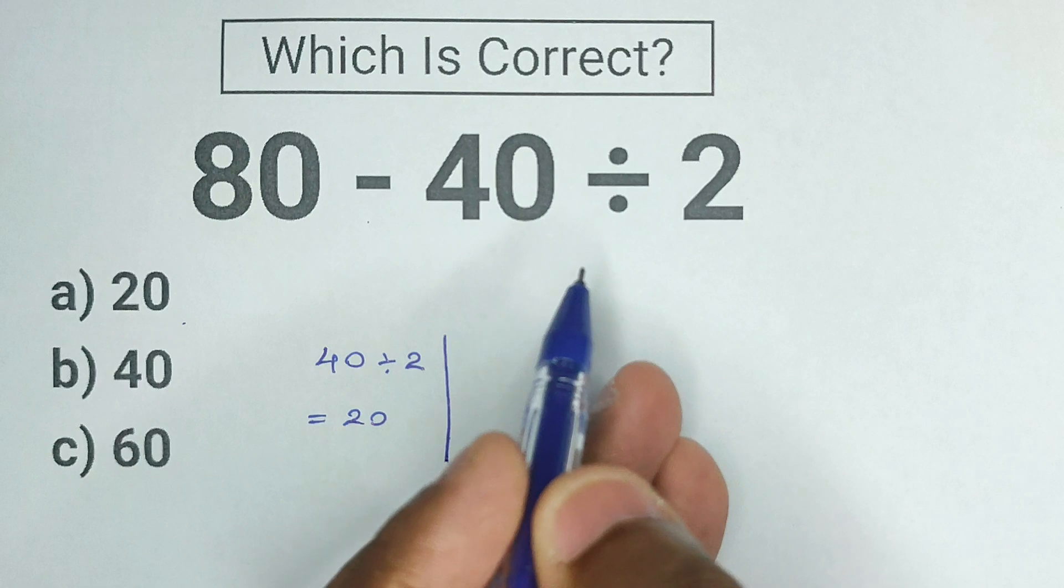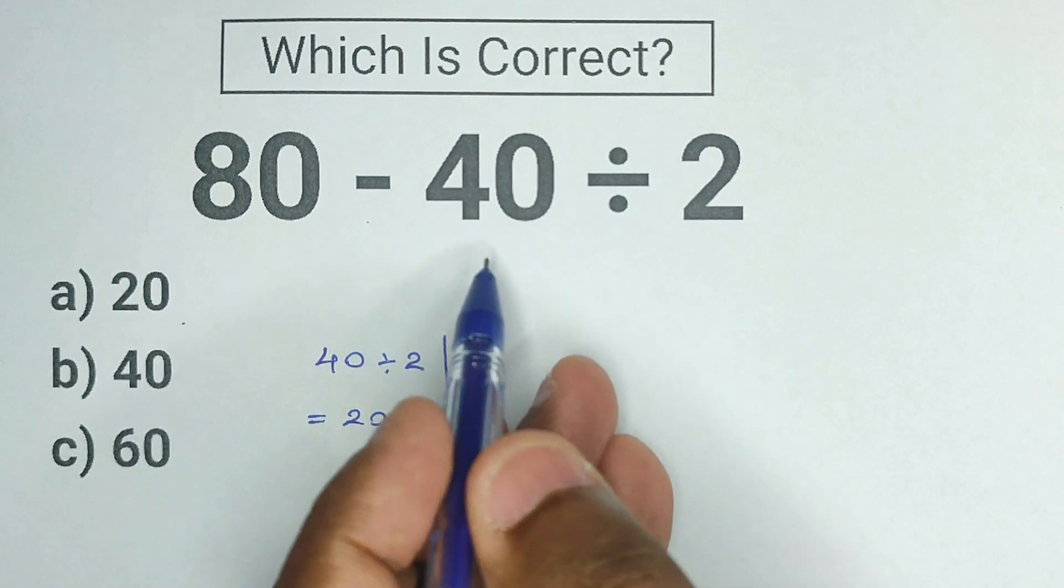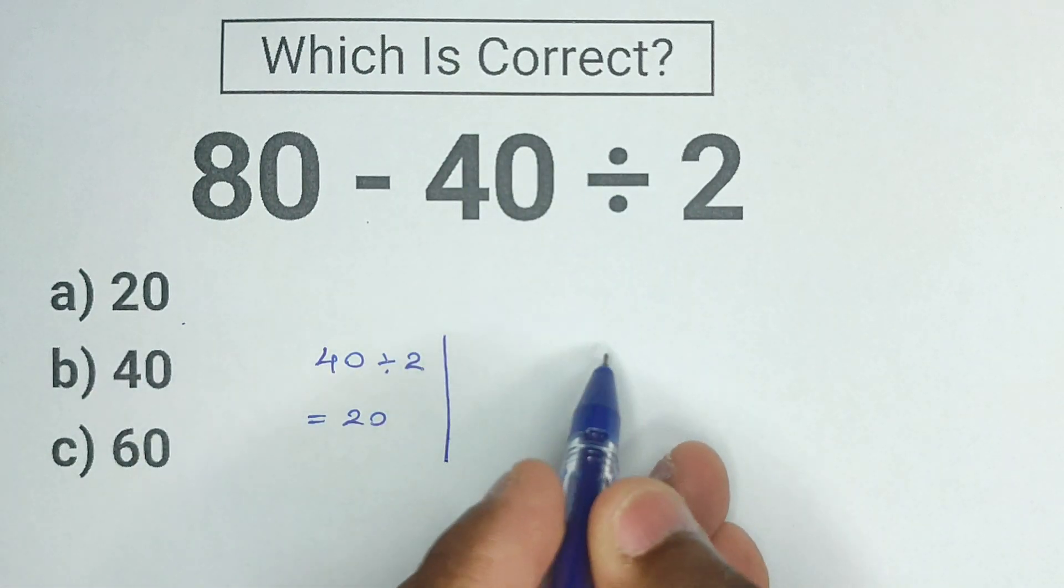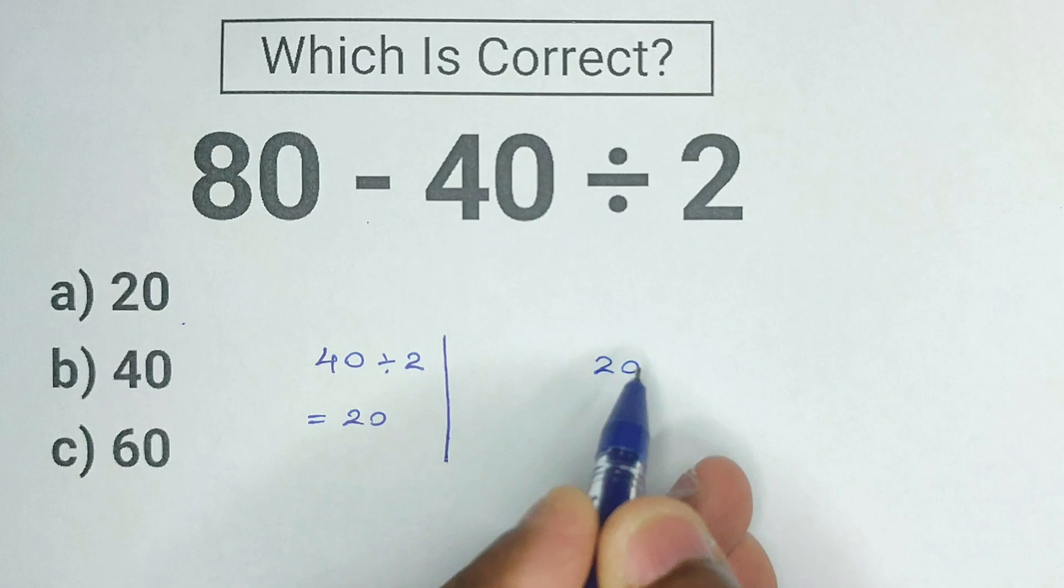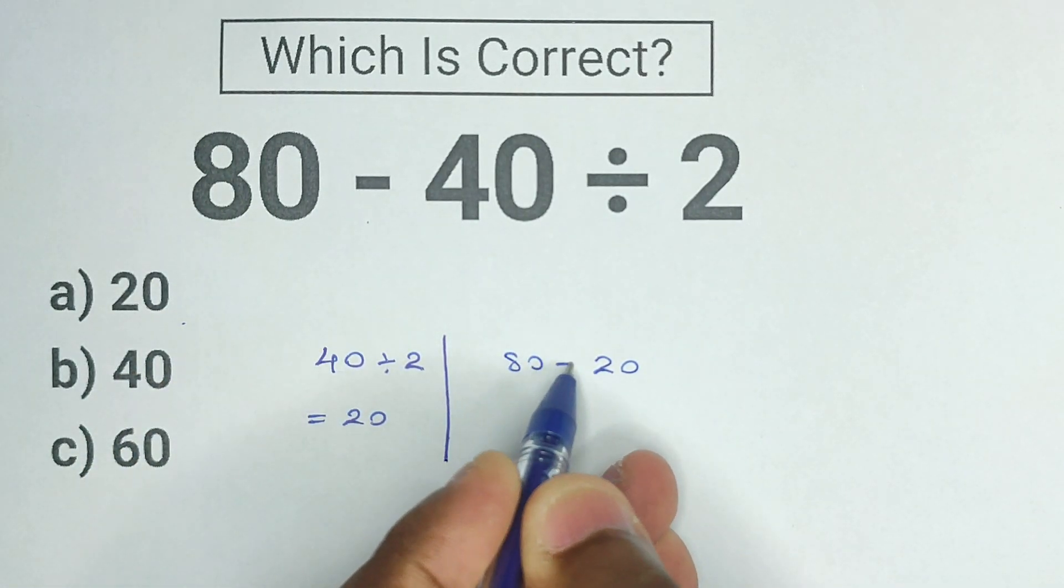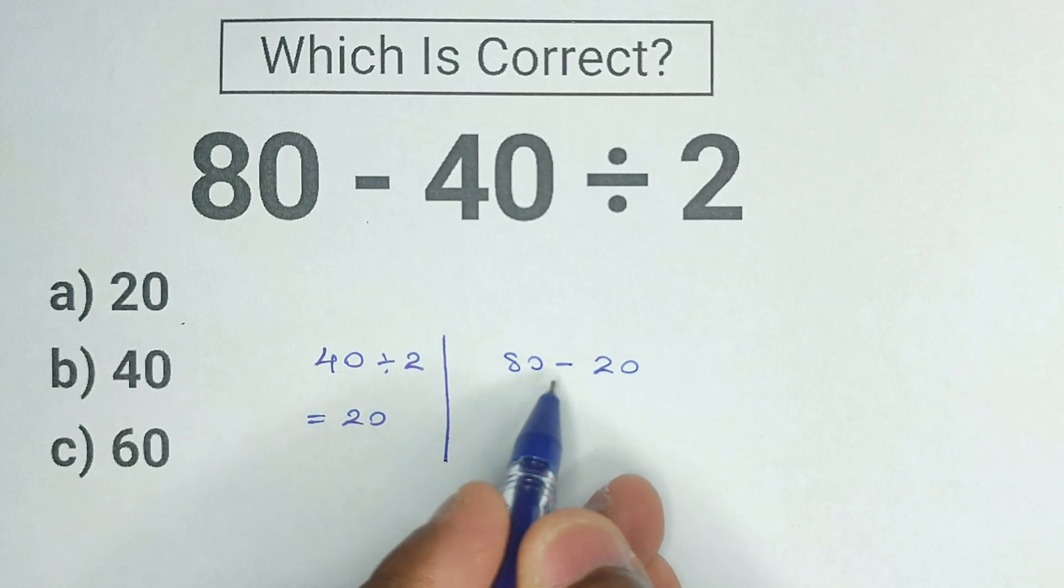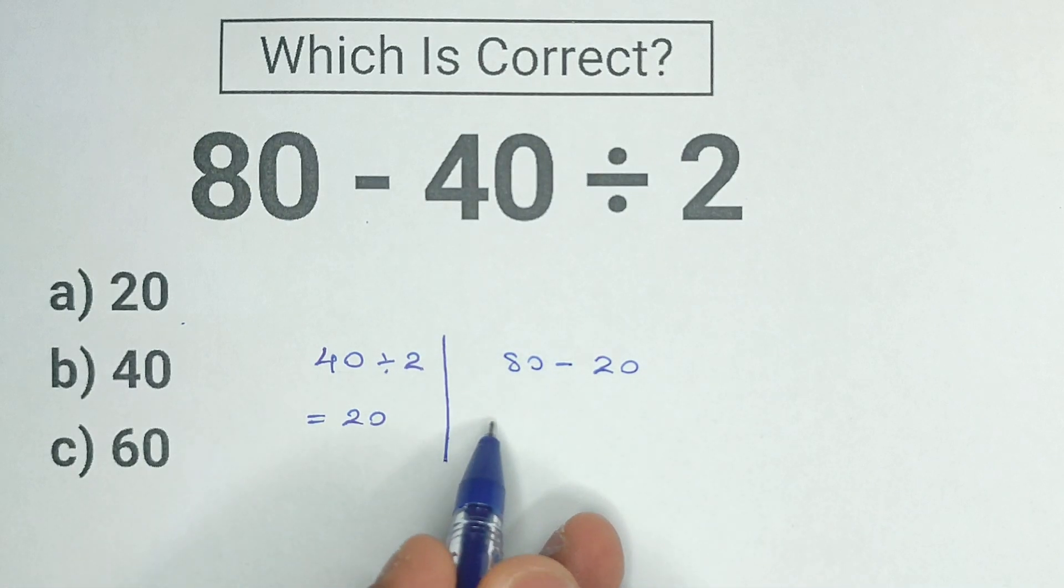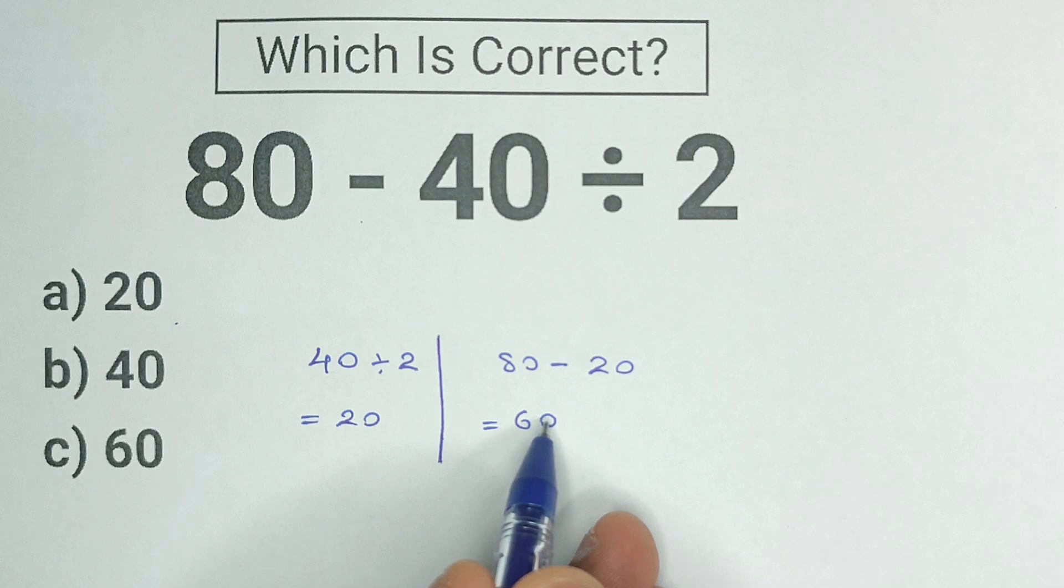40 divided by 2 is going to be the first step we do in this problem. And we all know 40 divided by 2 is equal to 20. And we can't forget about the left side of this expression. This 20 is being subtracted from 80. So now we have 80 minus 20. And we know that 80 minus 20 is equal to 60.